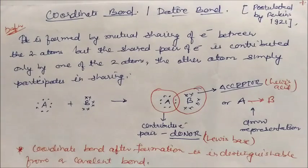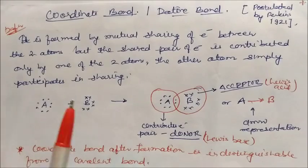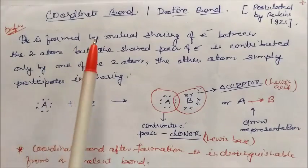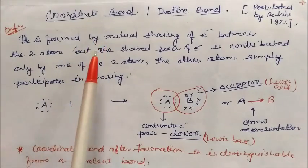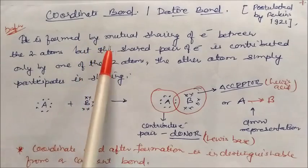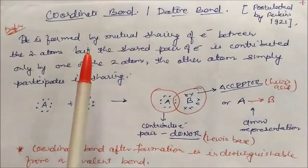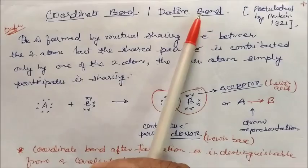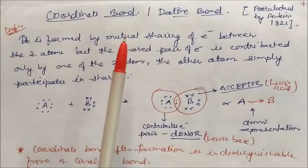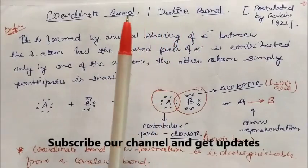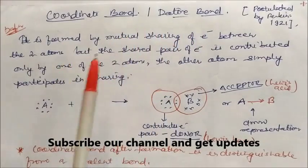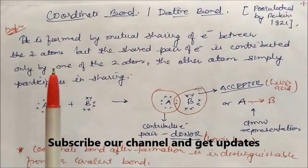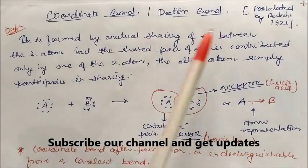Welcome. In this session we will study the coordinate bond. After finishing the covalent bond, our third bond is the coordinate bond. This is also called as the dative bond or a semi-polar bond. We will know why it is called as a semi-polar bond, and this was actually postulated by Perkins in 1921.